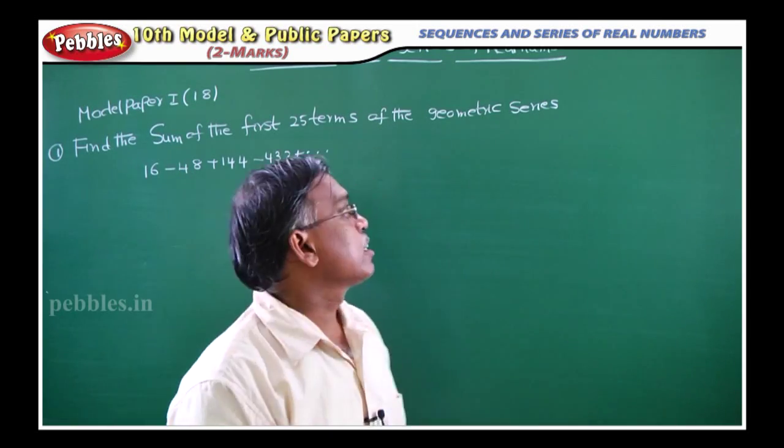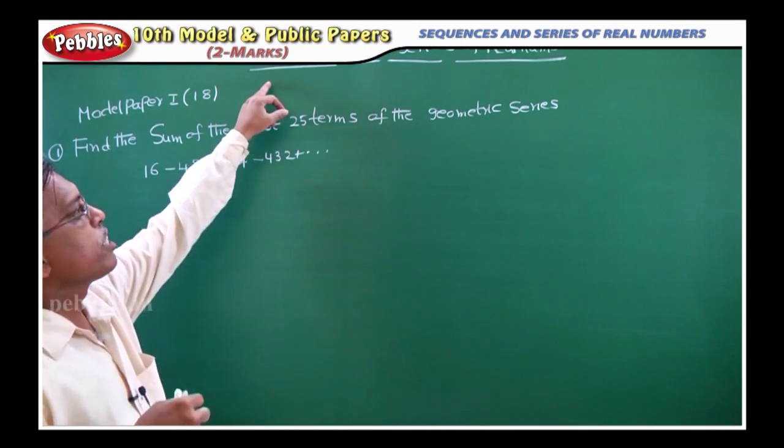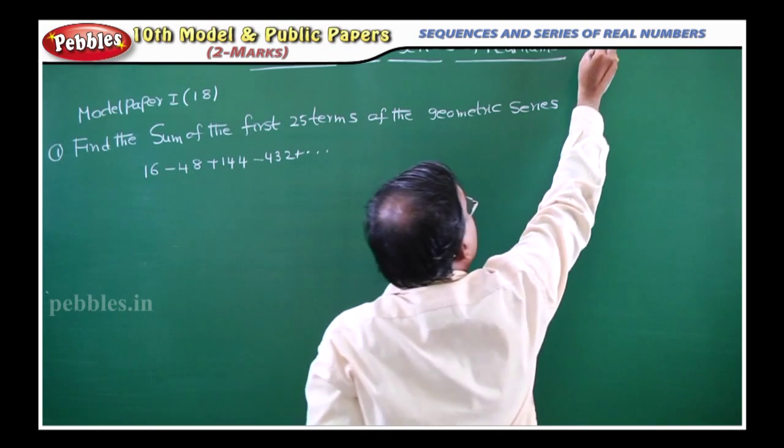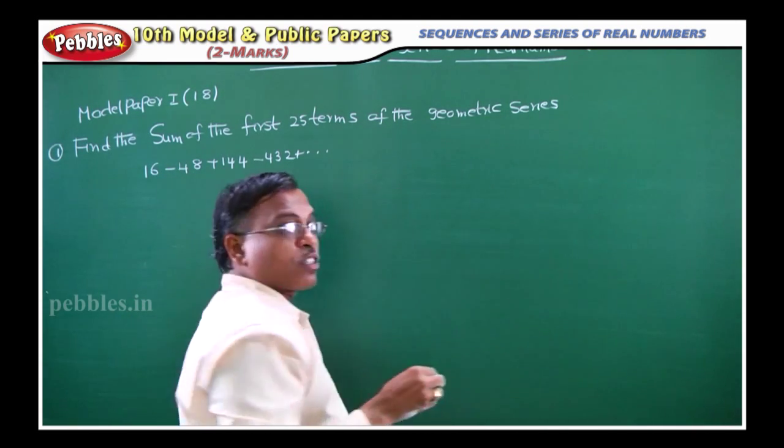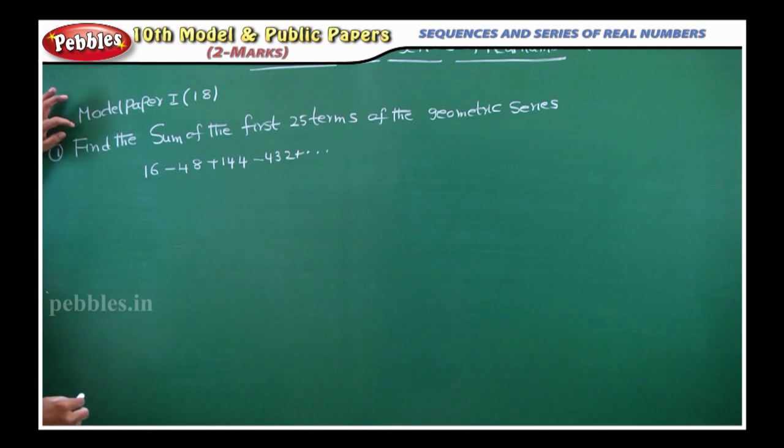Now, we'll start a new chapter, the second chapter: sequences and series of real numbers. In this two-mark problems section, we are going to discuss model paper 1, question 18, and we are doing it as the first question.